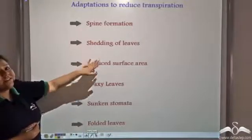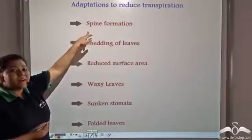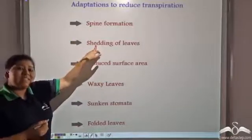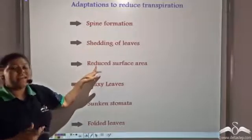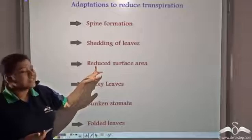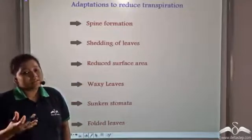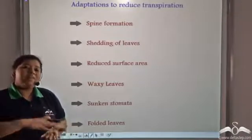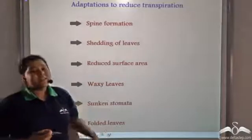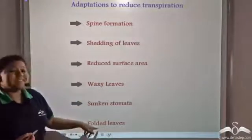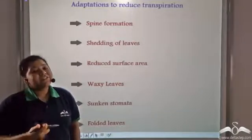So these are the various adaptations: spine formation in xerophytic plants, shedding of leaves in deciduous plants, reduced surface area in evergreen cold-country trees, waxy leaves in equatorial climate plants that have a broad leaf surface, sunken stomata in plants like Nerium, and finally folded leaves in plants like Hindu rope — these are the various adaptations by which plants reduce the rate of transpiration.